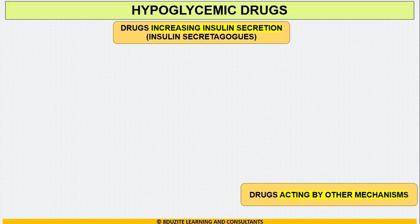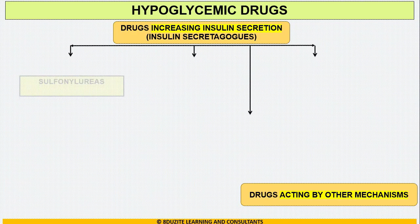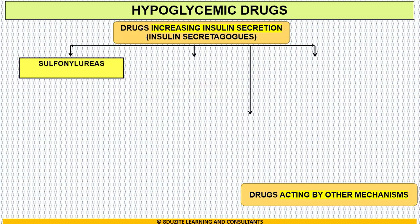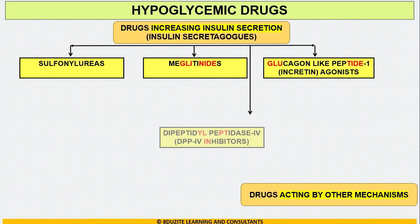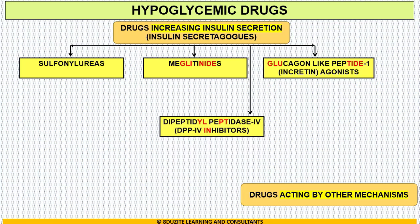Drugs that increase insulin secretion have four categories: first, sulfonylureas; meglitinides; glucagon-like peptide-1 agonist or incretin agonist; and last, dipeptidyl peptidase-4 or DPP-4 inhibitors.